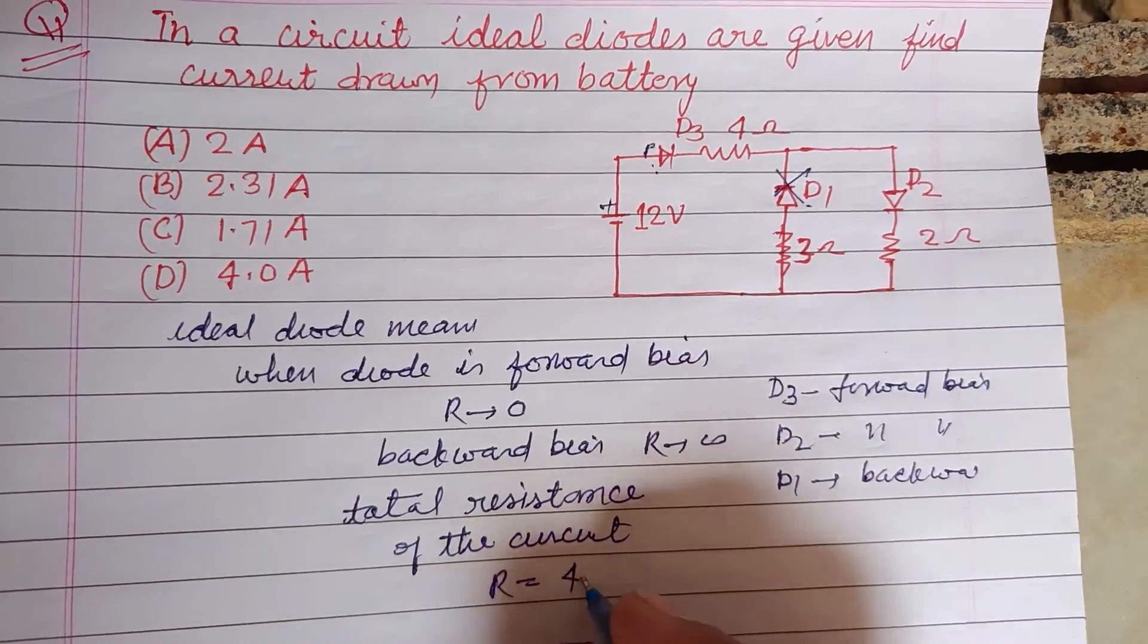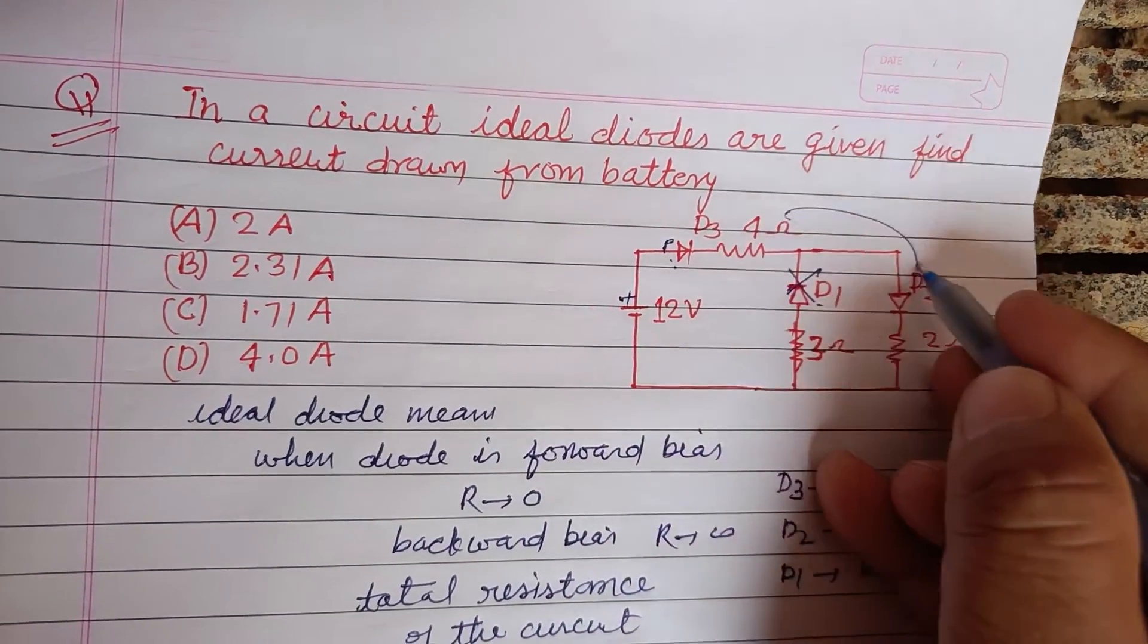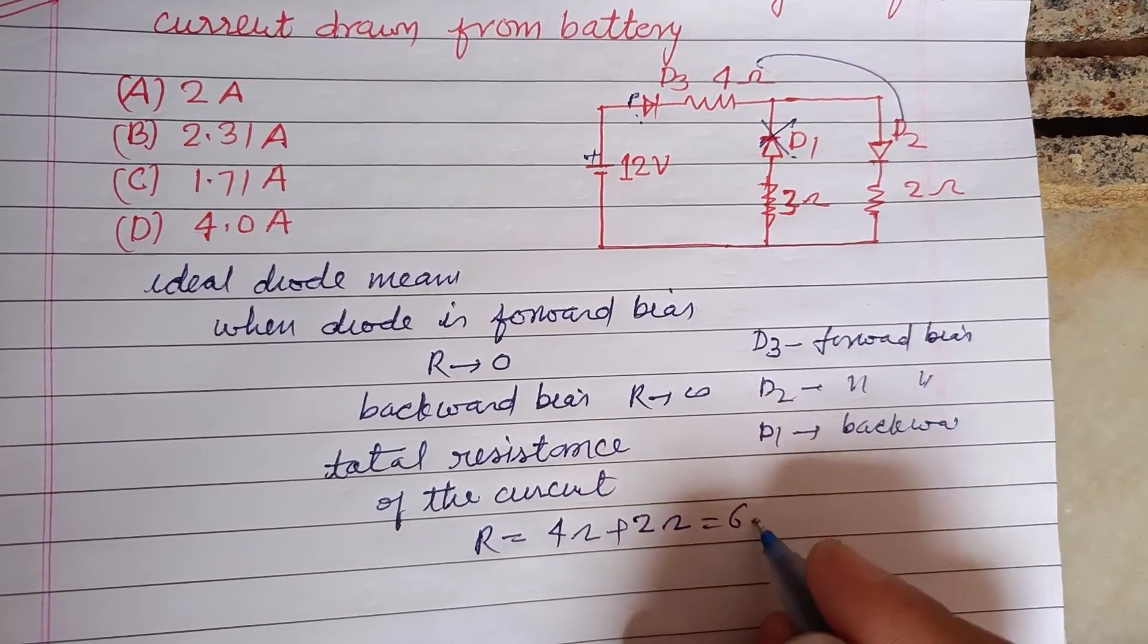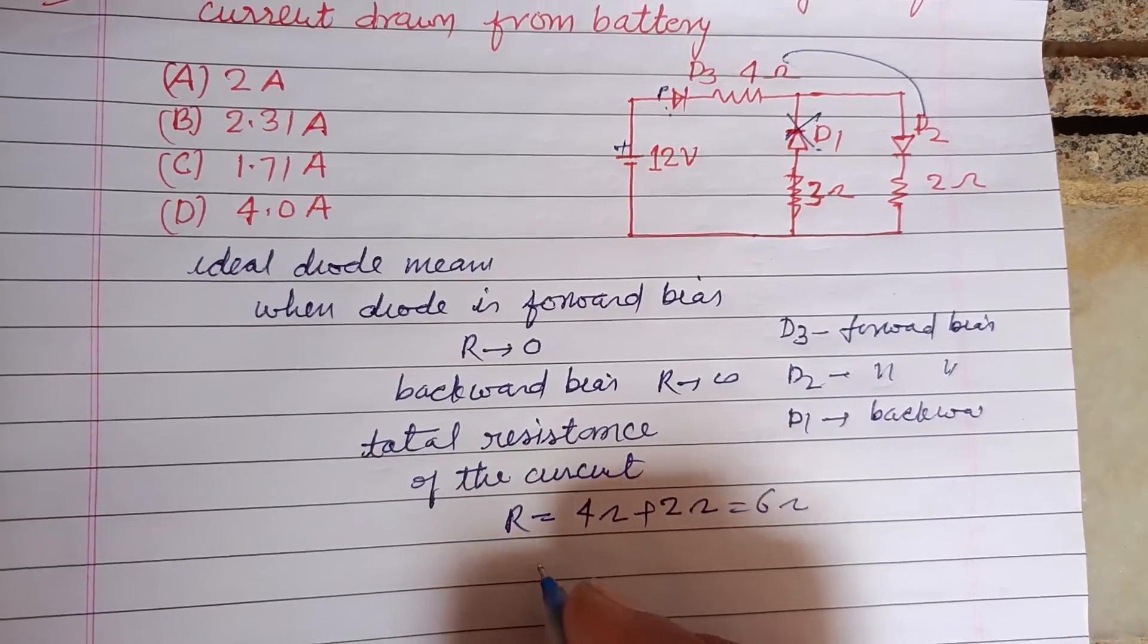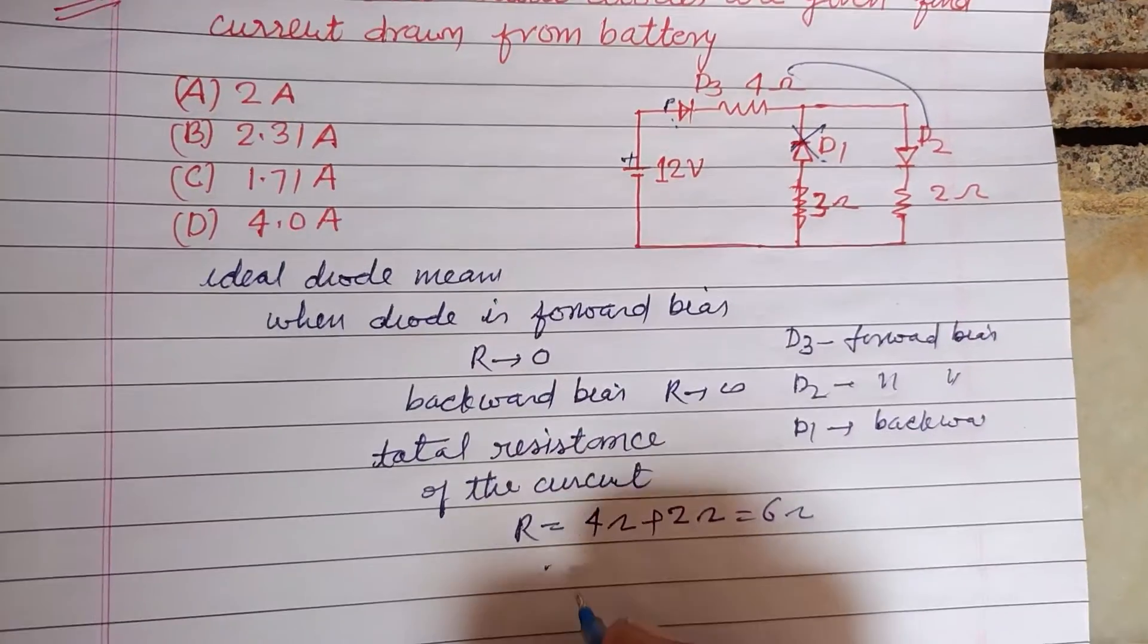Plus, because this is in series, plus 2 Ohms. This is 6 Ohms. And voltage of the battery is 12 volts.